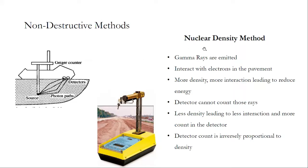Among the non-destructive methods, the most popular is the nuclear density method. In this method, a source emits gamma rays and a detector counts the electrons. There is interaction between the gamma rays and the field soil — if the density of the soil is higher, there is more interaction, which reduces the energy of the gamma rays. If the density is lower, the reduction in energy is less. Based on the electron counts, the nuclear density machine can determine the in-situ density; detector count is inversely proportional to field density.